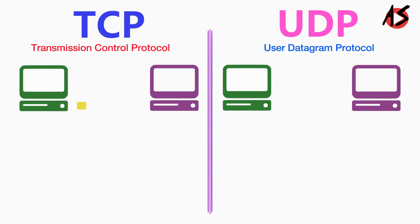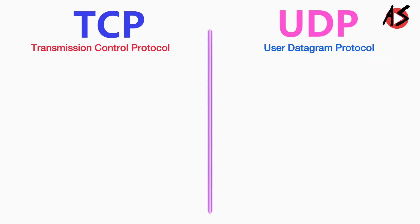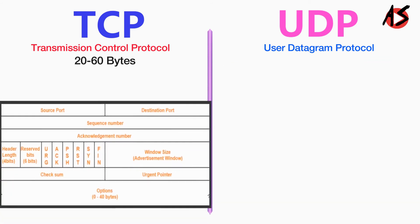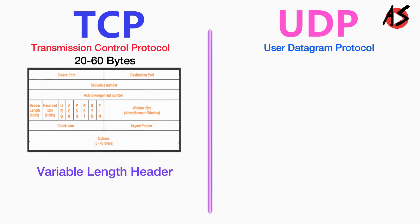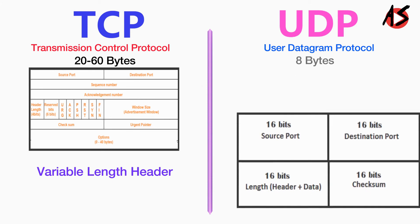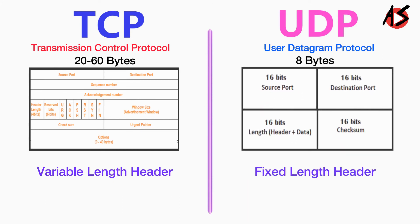TCP is comparatively slower than UDP, while UDP is faster, simpler, and more efficient than TCP. TCP has a 20 to 60 bytes variable-length header, whereas UDP has an 8 bytes fixed-length header.